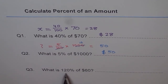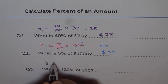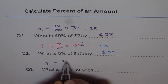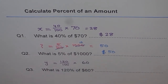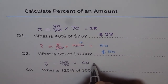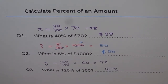So we define a variable: Y equals 120% which is 120 over 100, times 60. Now use a calculator: 120 divided by 100, times 60 — you can do it all in one row. You get 72. The units are dollars, so the answer is $72.